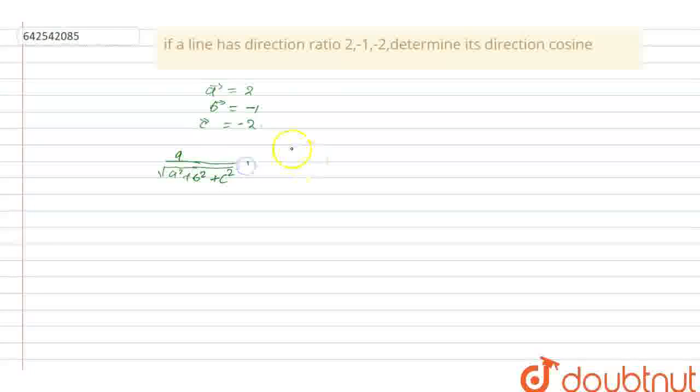and B upon under root A square plus B square plus C square, and C upon under root A square plus B square plus C square. These are the direction cosines. So we put the values here,